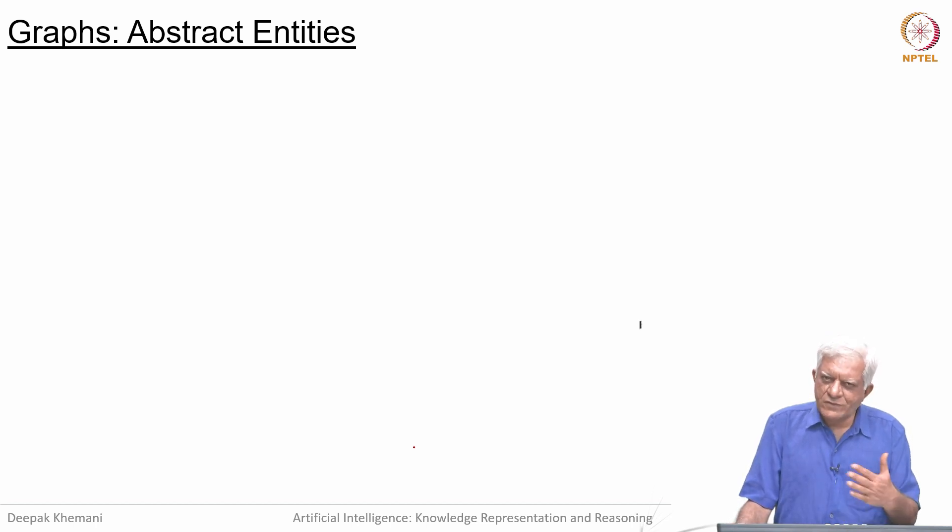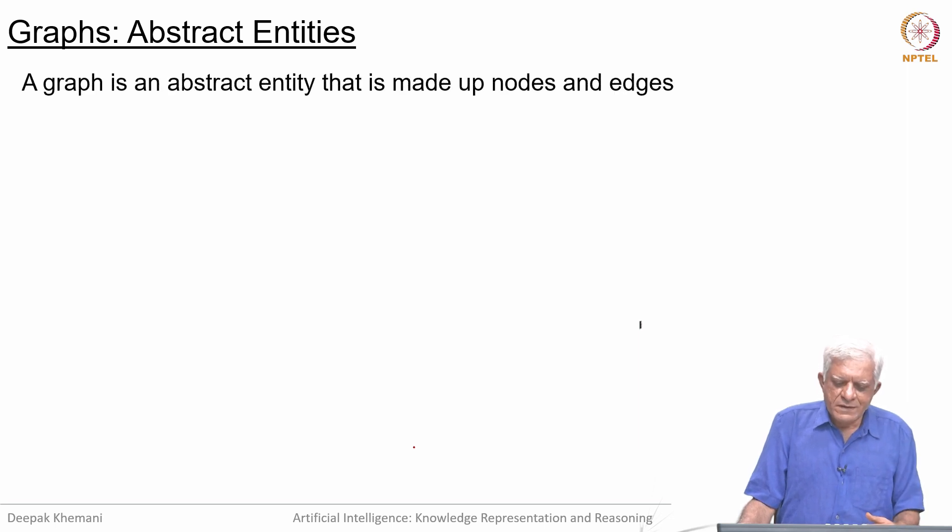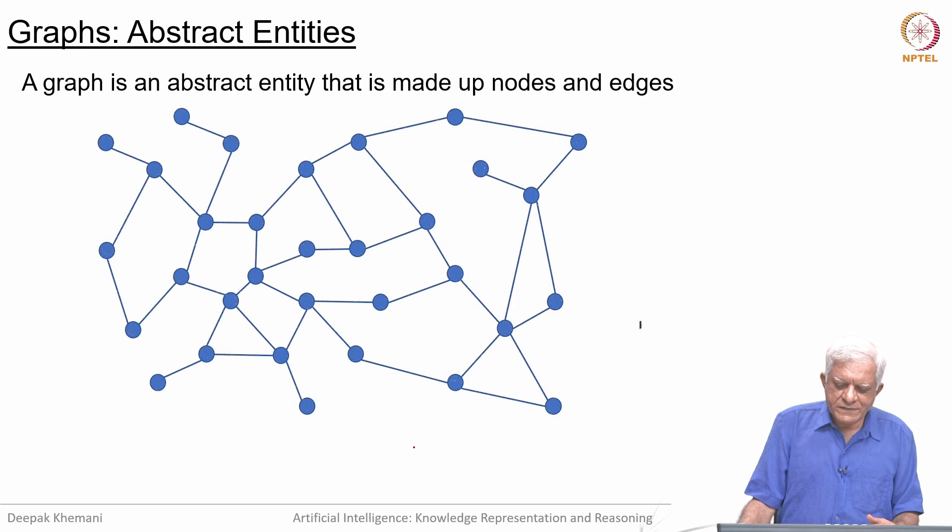We are moving towards this idea of representing abstract structures or abstract entities. A graph is made up of nodes and edges. Typically one would draw a graph something like this, where every circle is a node and every line is an edge between two nodes.